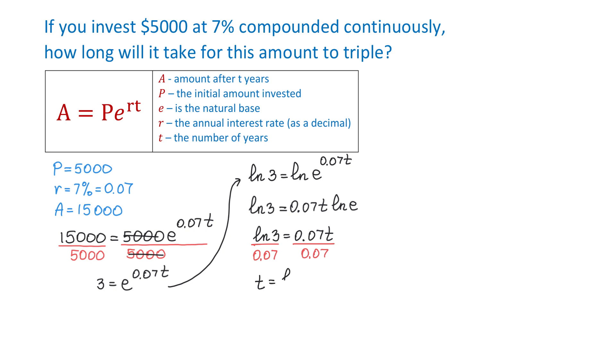t equals natural logarithm of 3 divided by 0.07.